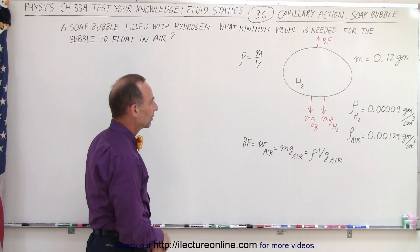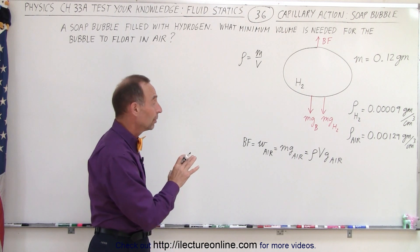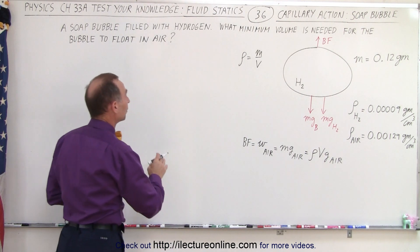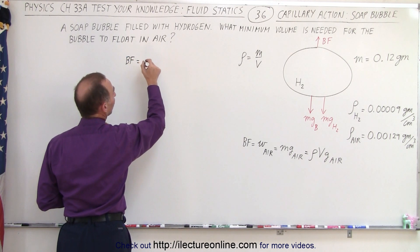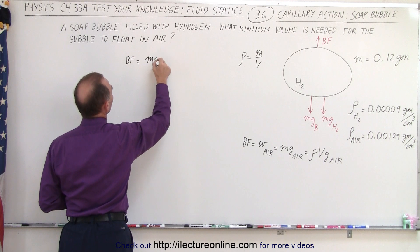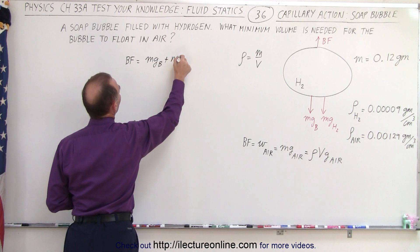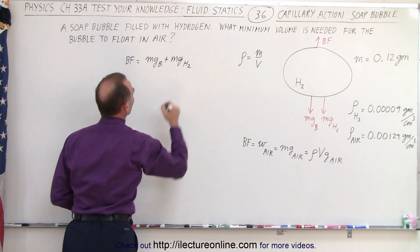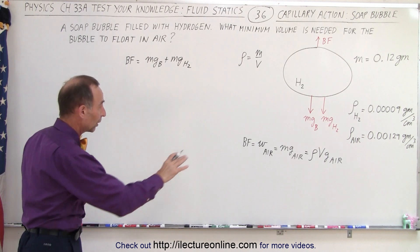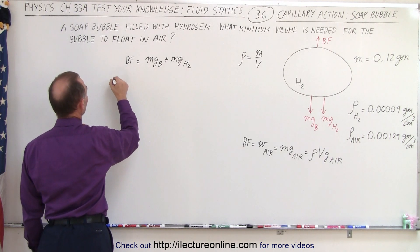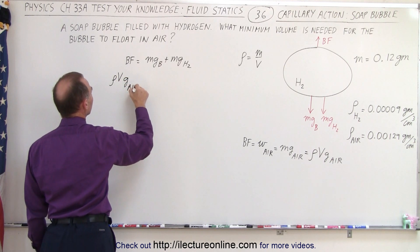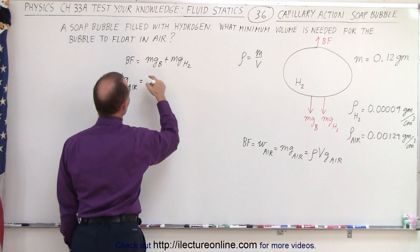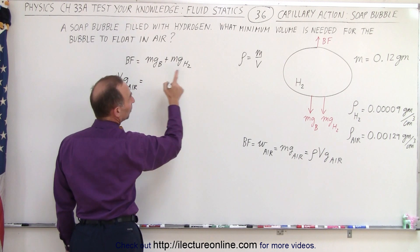Alright, so now that we know that, we can go ahead and set up an equation. We know that the buoyancy force must equal the weight of the bubble plus the weight of the hydrogen. So let's go ahead and plug in the equation. So on the left side we have the buoyancy force, the density, the volume, and the g for air equals the mg of the bubble.